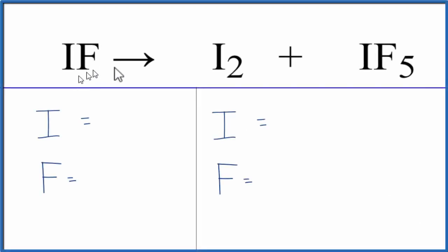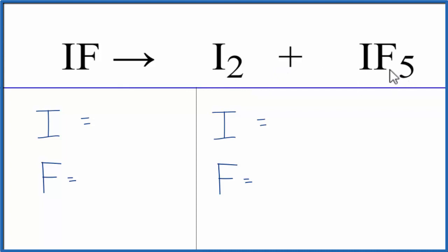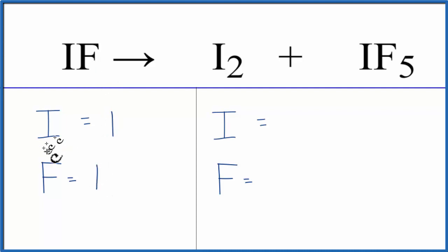In this equation we have IF and it decomposes into I₂ plus IF₅. So let's balance the equation. We'll start by counting the atoms on each side. On the reactant side we have one iodine and one fluorine.